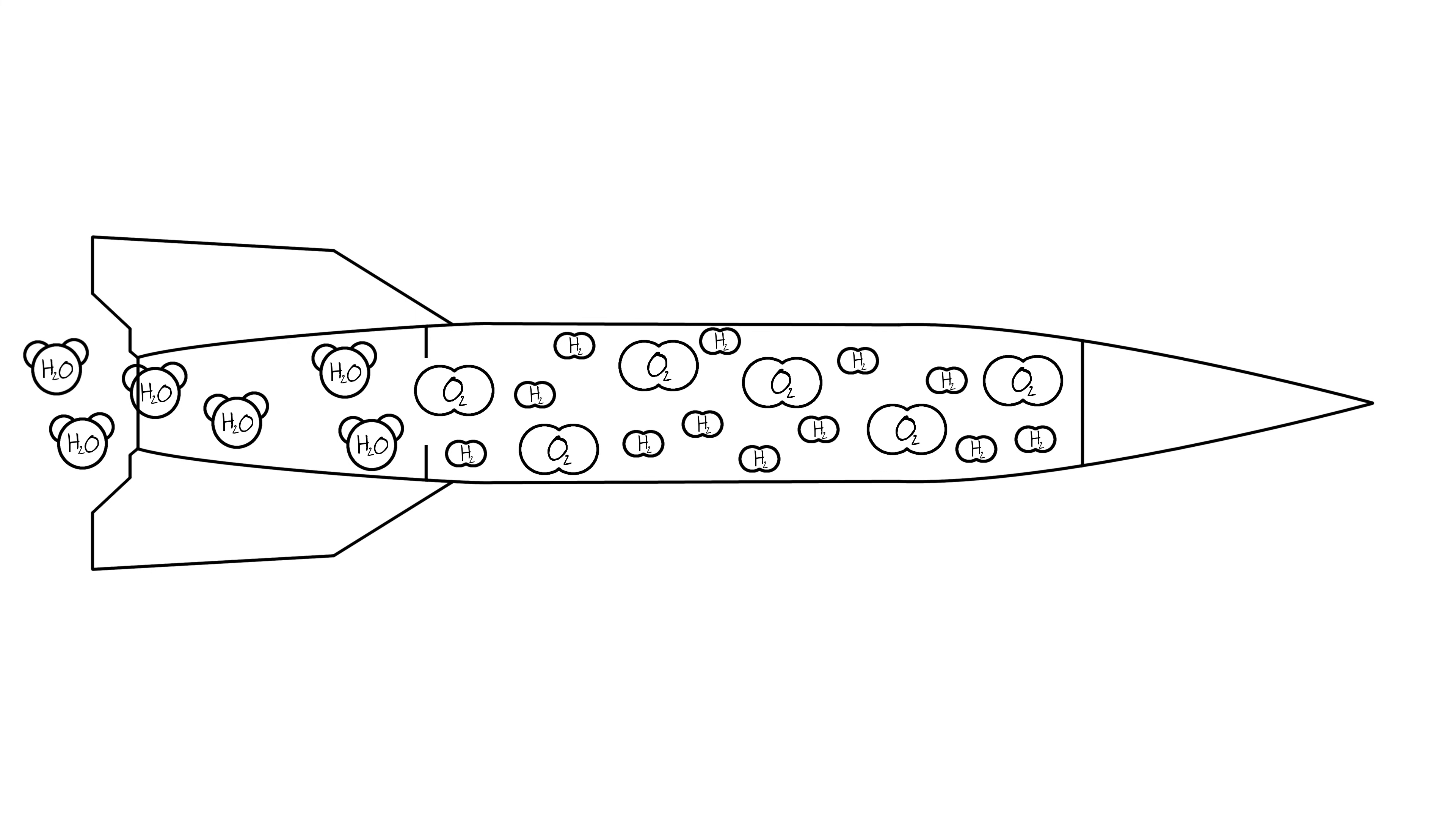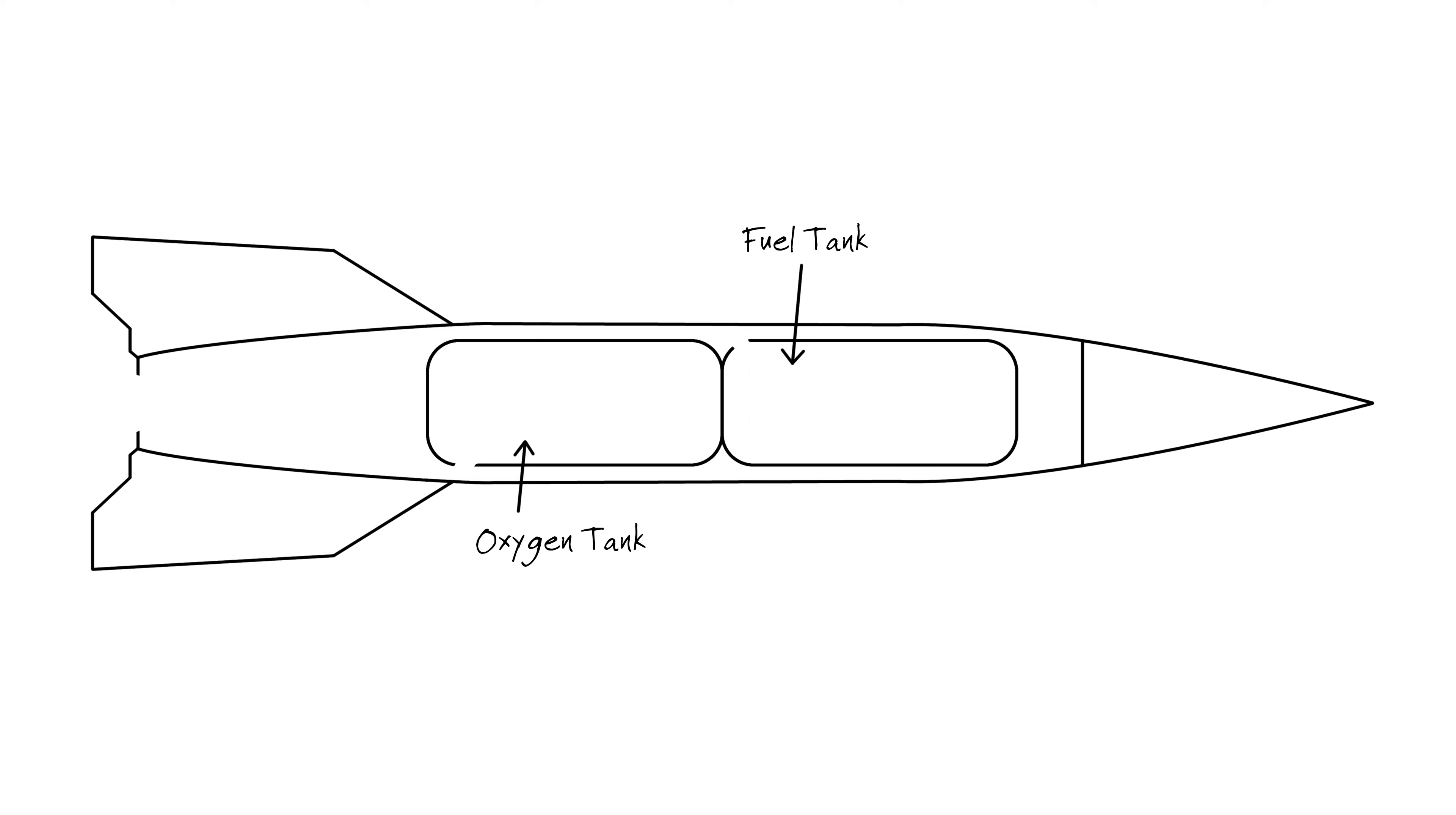Step one is to separate the fuel and oxygen into their own tanks. Step two is to add a third tank, called a combustion chamber, where the actual burning of fuel will take place. This not only makes the rocket safer, since we can control how much fuel and oxygen are in contact and burning at any given time, it also lets us get the most efficient reaction possible.